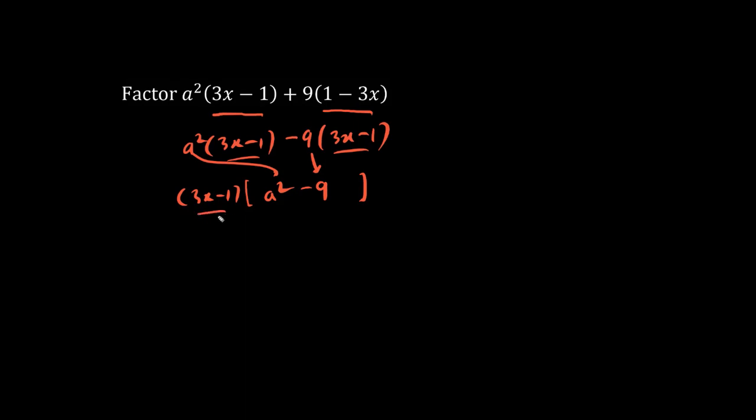Notice how the factor 3x minus 1 times a squared is 3x minus 1 times a squared. Similarly, 3x minus 1 times negative 9 is 3x minus 1 times negative 9.